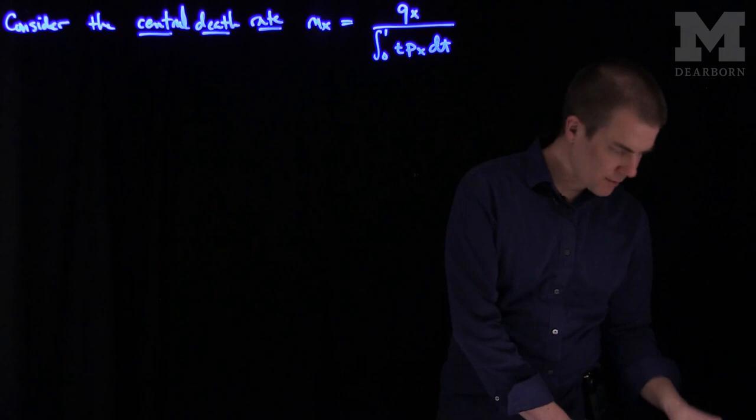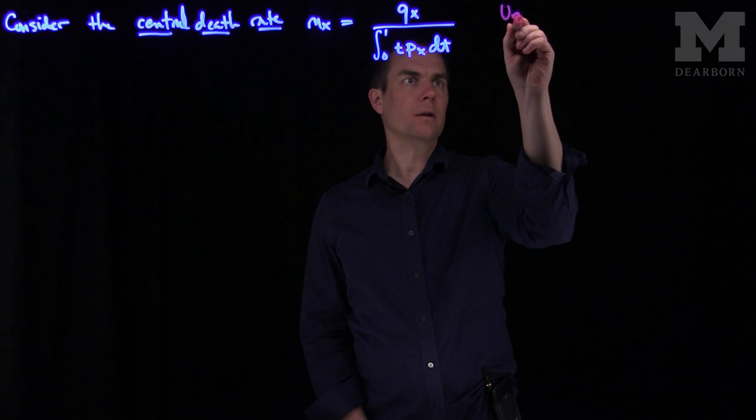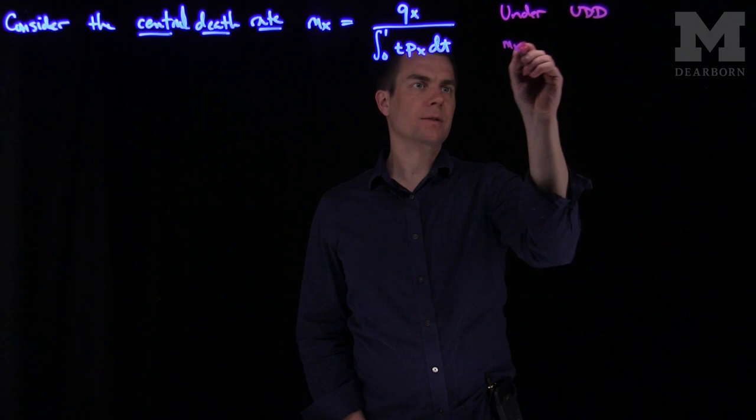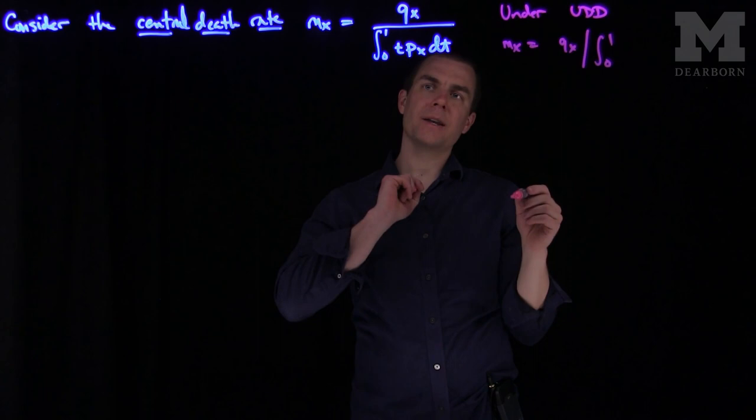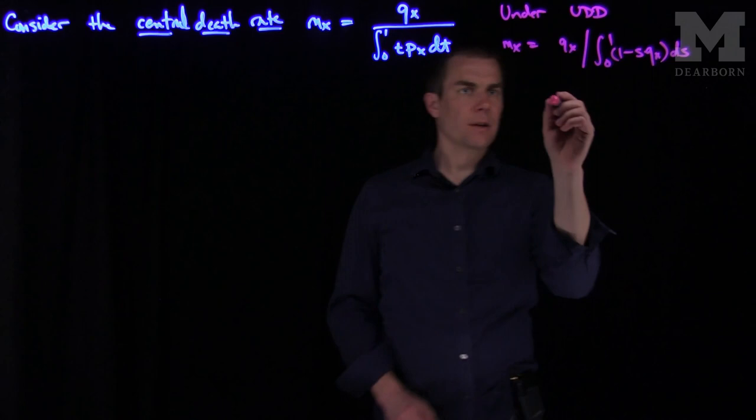We can make several different assumptions. If we make, for example, an assumption under UDD, this mx becomes qx over the integral from 0 to 1 of 1 minus tqx, which is 1 minus s times qx under the UDD assumption, plus sds. We can easily integrate this, and we can see this is going to be qx over 1 minus qx over 2.